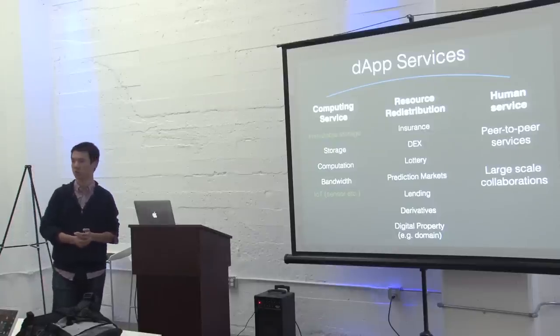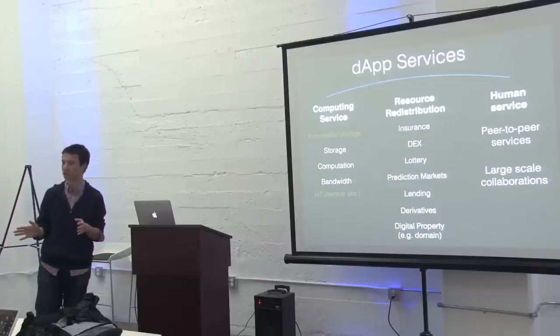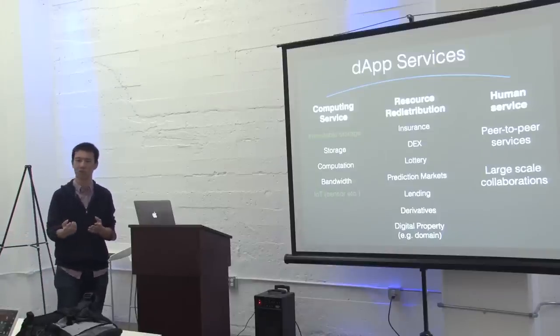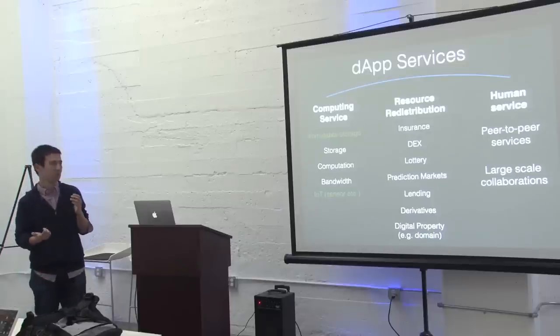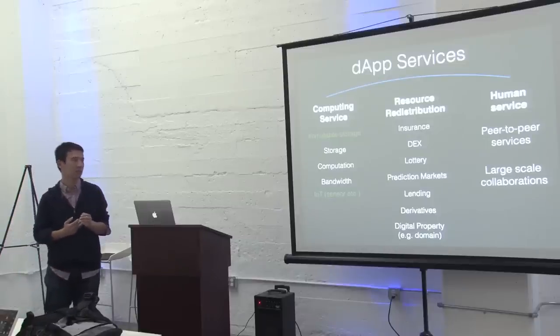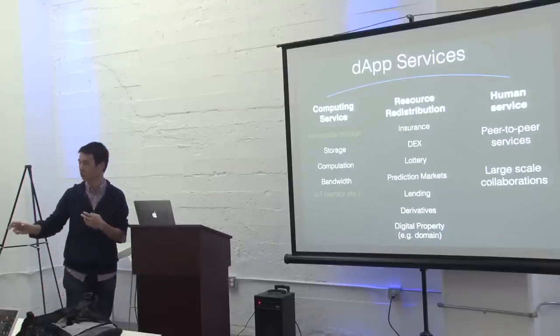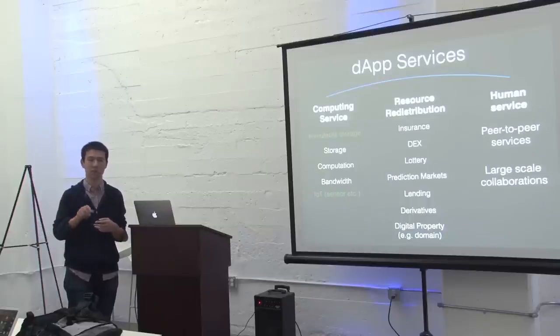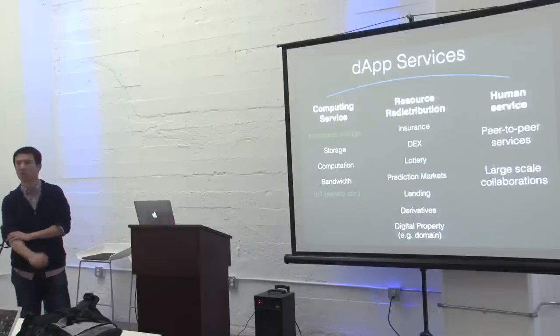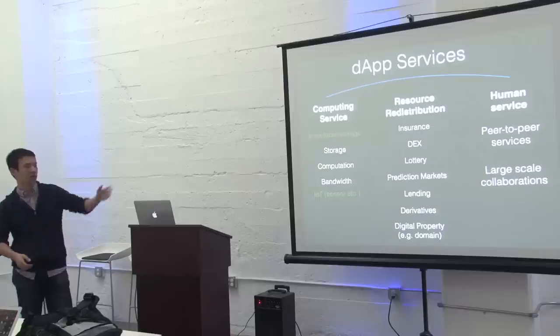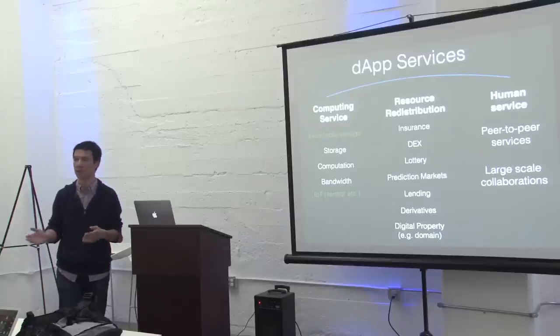The second category is resource distribution. That's a very broad category. Most projects tend to start with financial use cases because all you're manipulating is just capital. We redistribute capital between different parties. We look at things like insurance, decentralized exchange, lottery, prediction markets, lending - all very financial, but all they're doing is manipulating and moving tokens around. These tokens can be pegged to external commodities or hard assets, but could also be some internal capital token of value. It could be an Ethereum token, whatever that is. The good thing is they're enforceable, they're self-enforceable. Then you have other types of things like digital property, which isn't necessarily a specific asset but could be a domain name, copyright, whatever that is.